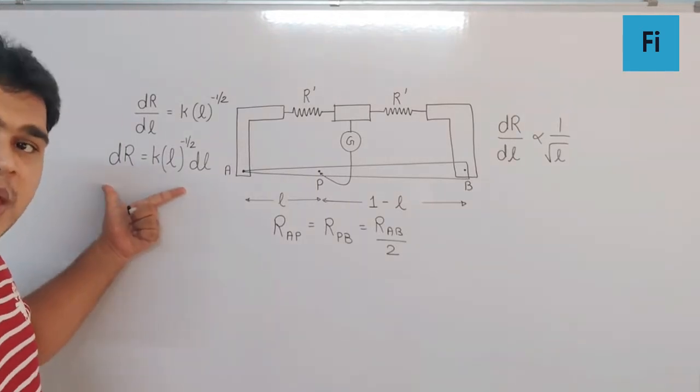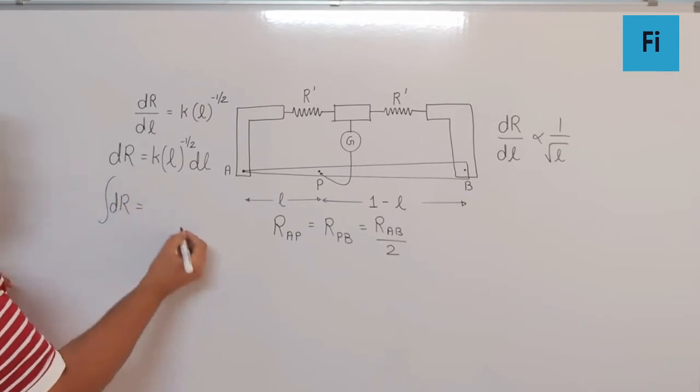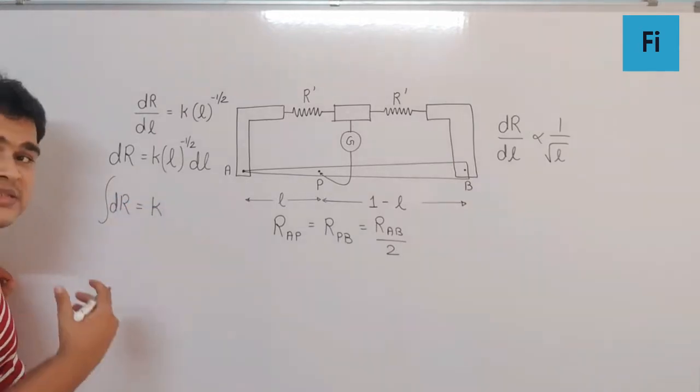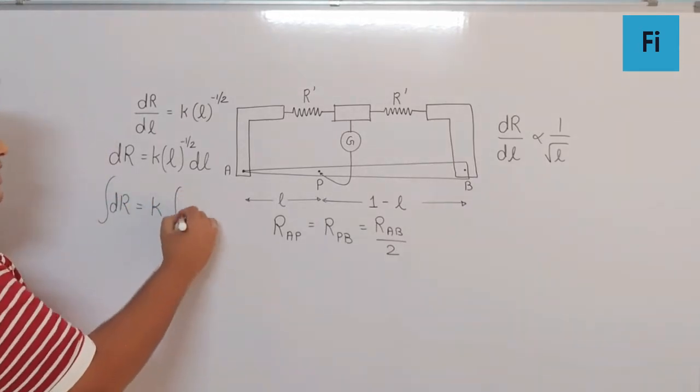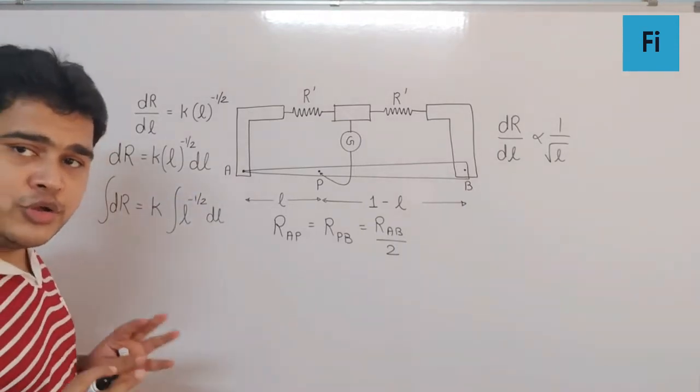For integration, we're going to use ∫dR = k∫L^(-1/2) dL, and I'm going to put the limits from 0 to R for the position from 0 to x. That x can be anything, please remember that.